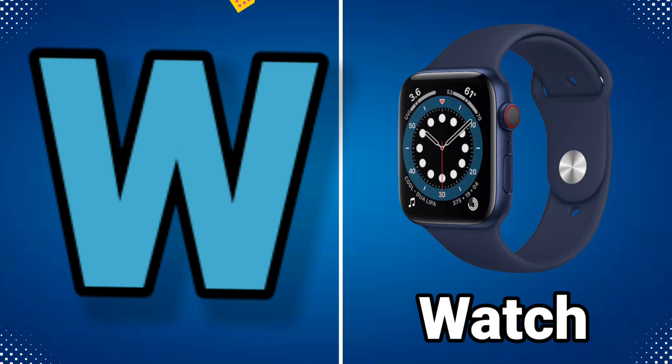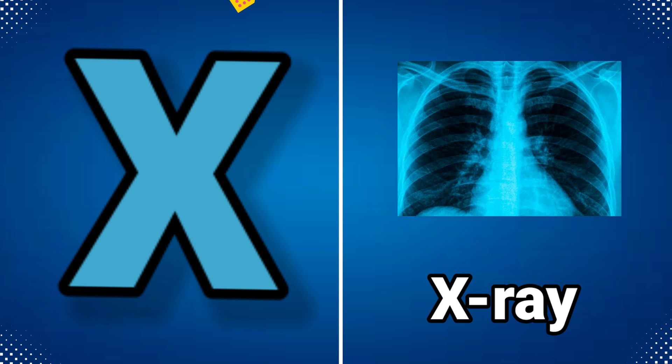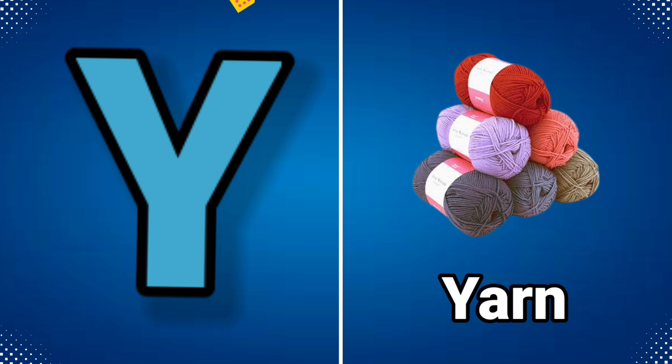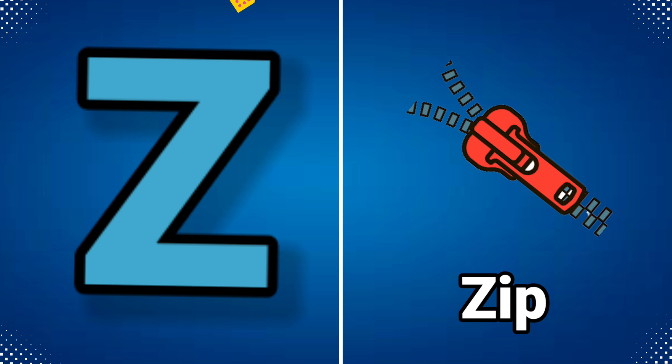W for watch, X for x-ray, Y for yarn, Z for jeep.